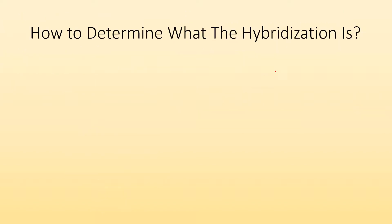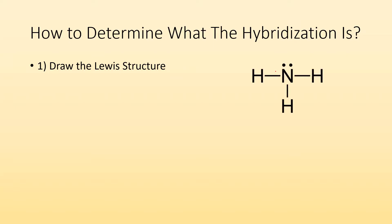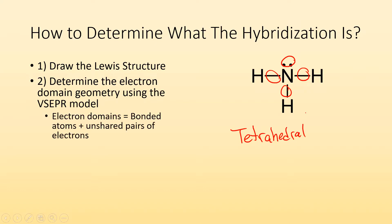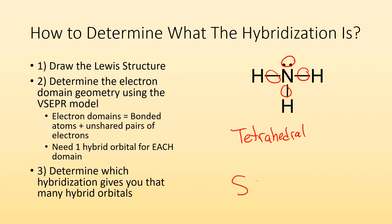So how do we determine what the hybridization is? The first step is to draw the Lewis structure for that molecule — for example NH3. The second step is to determine the electron domain geometry using the valence shell electron pair repulsion model. With one, two, three, four domains, that's going to tell me it's tetrahedral for the electron domain. I need to look at the bonded atoms and the unshared pairs of electrons, add them all together, and I need one hybrid orbital for each domain. If I need four domains, that's going to be sp3 hybridization, because that gives me four domains.